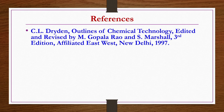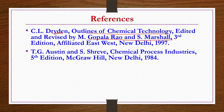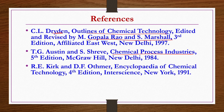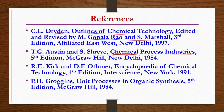In the next lecture, we will discuss the production of different types of non-ferrous metals. The references for today's lecture include: Outlines of Chemical Technology by Dryden, edited by Gopal Rao and Marshall, third edition; Chemical Process Industries by Austin and Shreve, fifth edition; Encyclopedia of Chemical Technology by Kirk-Othmer; and Unit Processes in Organic Synthesis by Groggins. The entire lecture notes are primarily prepared from Dryden's Outlines of Chemical Technology.